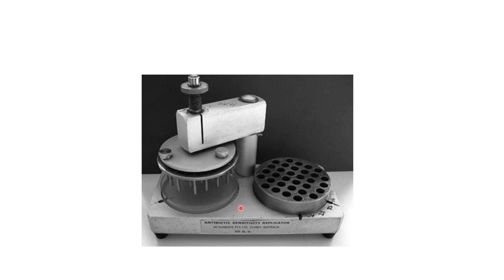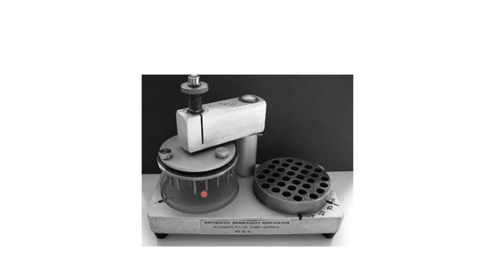This equipment is called a multiple inoculator or Steer's replicator. In agar dilution, multiple strains can be inoculated on Mueller Hinton agar of different antibiotic concentrations for calculating the MIC. This device has wells — each well contains a different type of strain or microorganism — and a probe. When the probe is dipped into the wells, organisms are transferred and can be inoculated onto Mueller Hinton agar in one step.